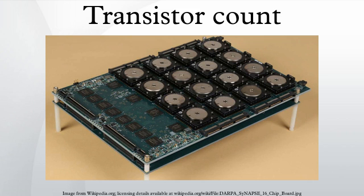A graphics processing unit is a specialized electronic circuit designed to rapidly manipulate and alter memory to accelerate the building of images in a frame buffer intended for output to a display. A field-programmable gate array is an integrated circuit designed to be configured by a customer or a designer after manufacturing.